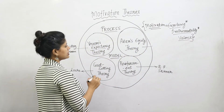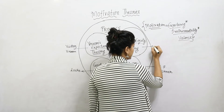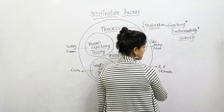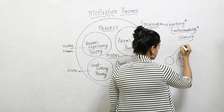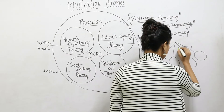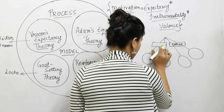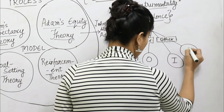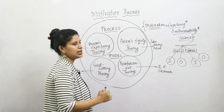Now we move to Adams' Equity Theory, given by John Stacey Adams. I will give you a diagram to make it clear. We have a weighing machine with two sides: one side represents 'others' and the other side represents the 'individual.' Each side has input and output. This represents the concept of fairness.